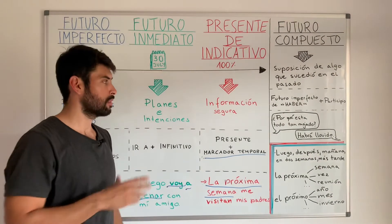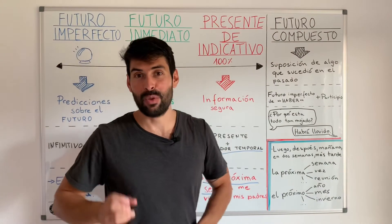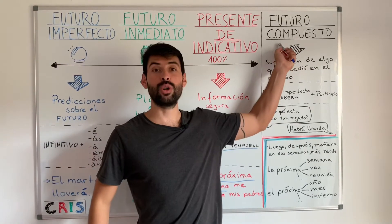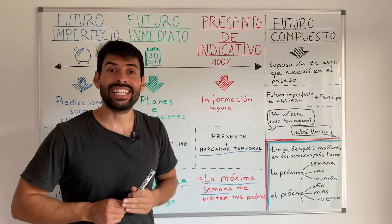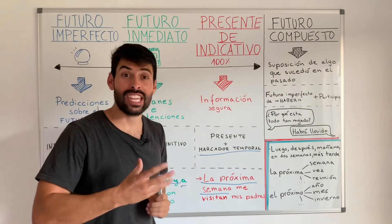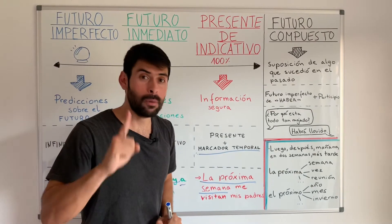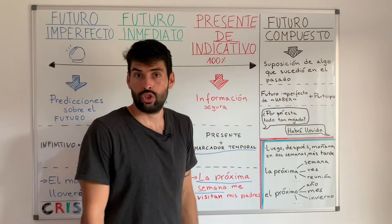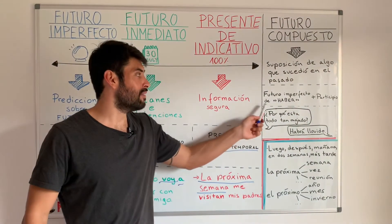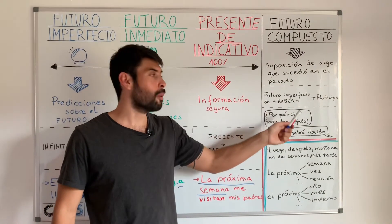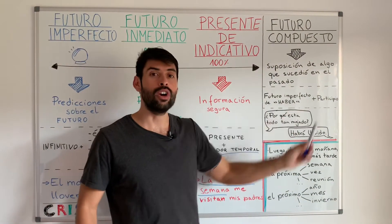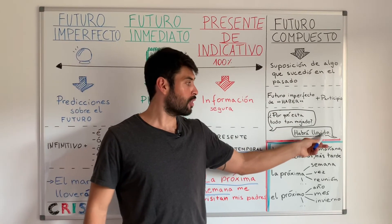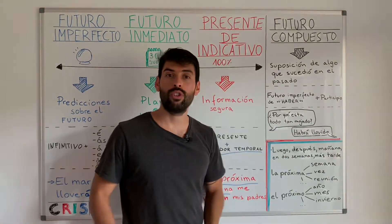Y para quienes tienen un nivel más elevado en el español, de seguro habéis escuchado del futuro compuesto, el cual lo utilizamos para suponer algo que sucedió en el pasado. En este ejemplo, mira bien: ¿Por qué está todo tan mojado? Habrá llovido. Se utiliza el verbo haber en futuro imperfecto más el participio. En este caso tenemos «habrá», que es la conjugación del verbo haber, más «llovido», que es la conjugación en participio del verbo llover.